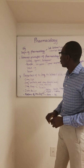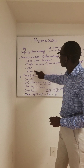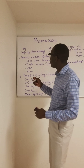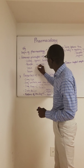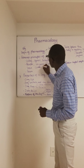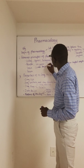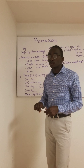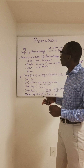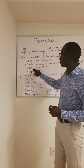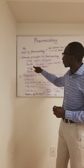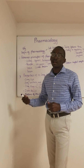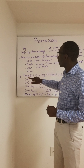Toxins are biological poisons produced by animals. Examples of toxins are produced by Clostridium bacteria — for example Clostridium difficile and Clostridium tetani — these produce toxins which are harmful to our body. We also have snake toxins.